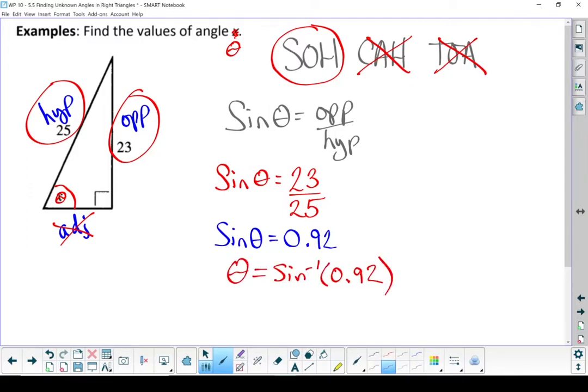So theta equals the inverse sine of 0.92. Punch that into my calculator using second function sine, and I've got 66.9 degrees. There's my angle.